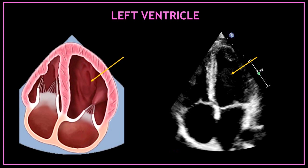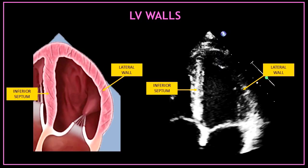The first big chamber at the top of the screen on your right hand side, that looks triangular in shape, is the left ventricle. In this view, the left ventricle is formed by two walls: on the left hand side between the two ventricles we have the inferior septum, and on the right hand side we have the left ventricular lateral wall.